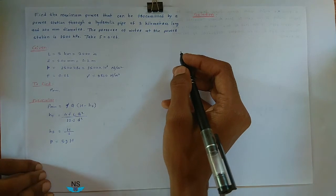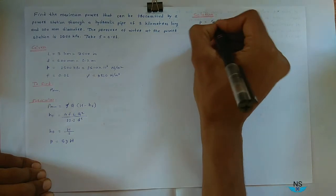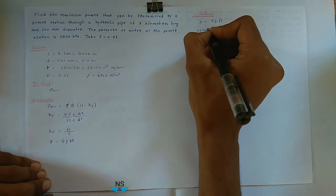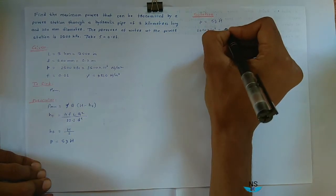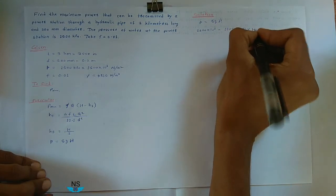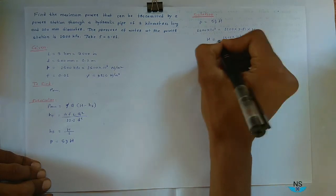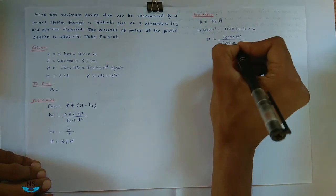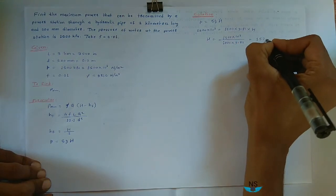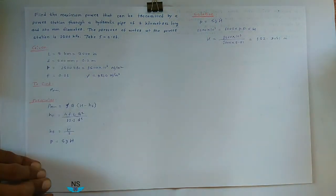Start with solution. First we have to find H. So pressure is equal to rho G H. Pressure we know, 1500 into 10 raised to 3, it is equal to rho for water, 1000 into G, 9.81 into H. So H becomes 1500 into 10 raised to 3 divided by 1000 into 9.81. H becomes 152.9051 meter.